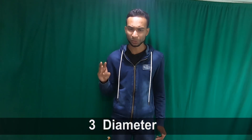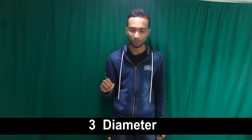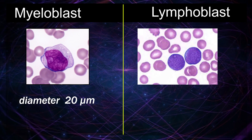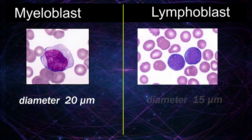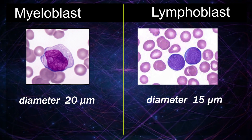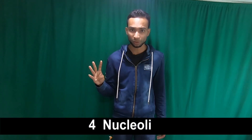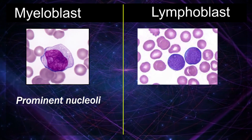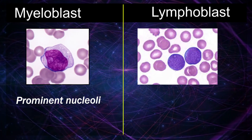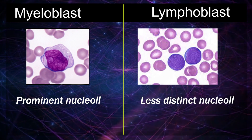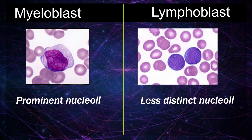Difference number three — diameter: the diameter of a myeloblast is about 20 micrometers, while the diameter of a lymphoblast is about 15 micrometers. Difference number four — nucleolus: a myeloblast nucleus has a prominent nucleolus, while the lymphoblast nucleus has a less distinct nucleolus.